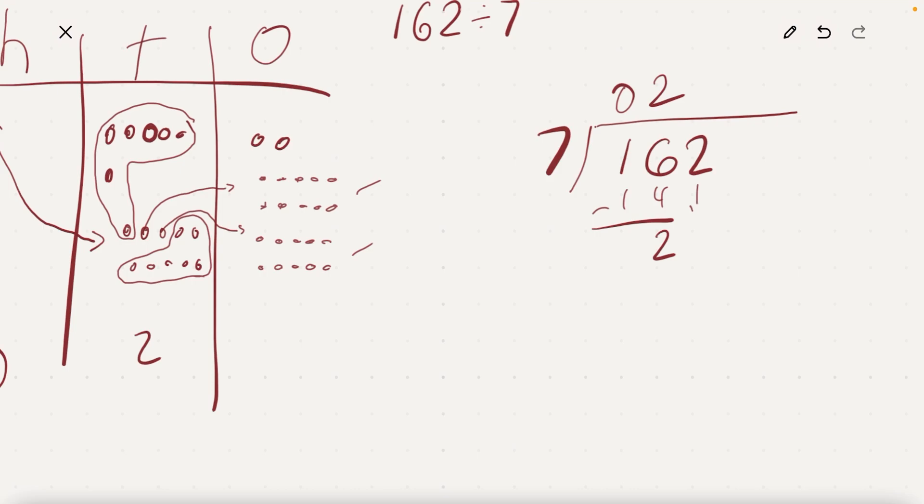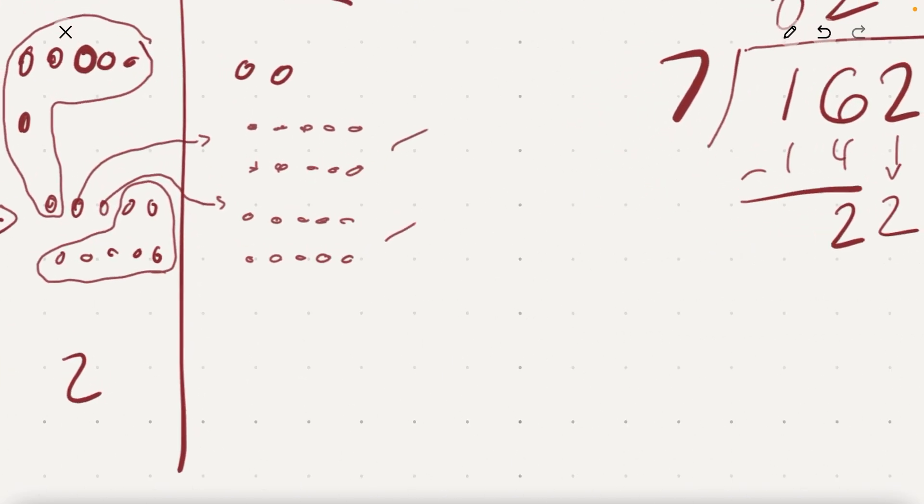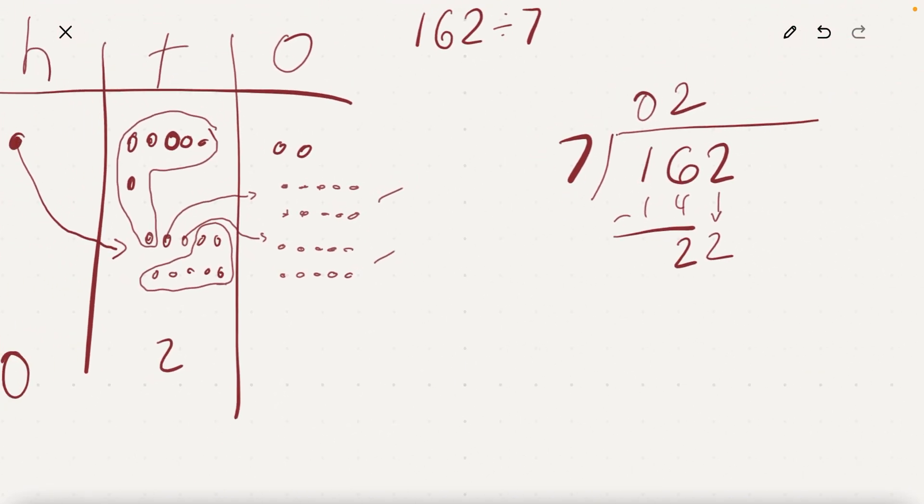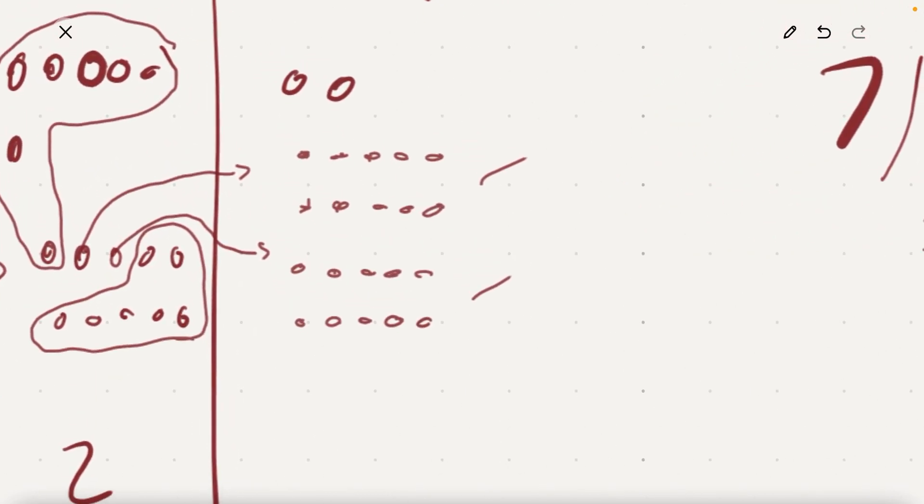And now what am I looking at? I have, right, 10, 20, and 2 more, 22, right? That's what happens when you bring down this 2. You're looking at 22 ones now. So that's something that this is really good for, is it just shows you're looking at place value. I'm looking at 22 ones. This algorithm, we can have a philosophical debate about whether you really need to understand what you're doing when you execute an algorithm. But I'm still making groups of 7.